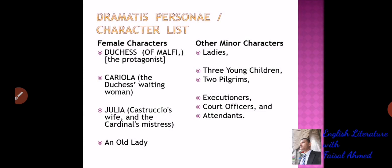Now we will get familiar with the female characters and other minor characters. The major female character and central character of this drama is the Duchess of Malfi — Malfi being the name of a place in Italy. She is the protagonist. Cariola is the Duchess's waiting woman, her servant. Julia is Castruccio's wife — Castruccio being the old lord — and the Cardinal's mistress. There is also an old lady, and other minor characters including three young children, two pilgrims, executioners, court officers, and attendants.